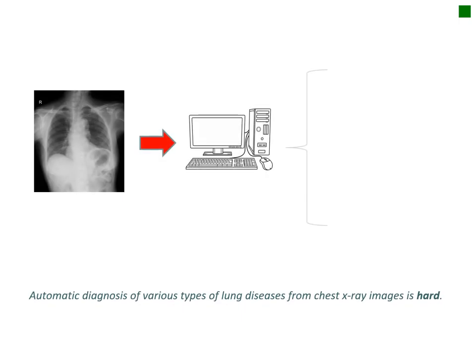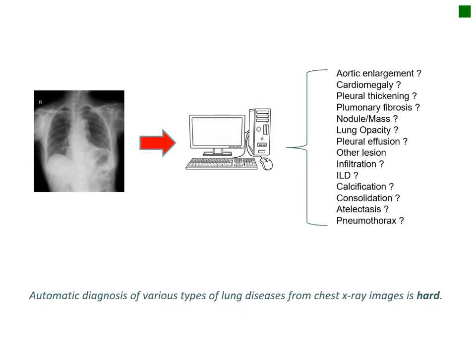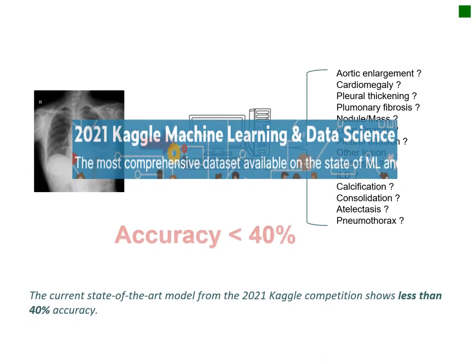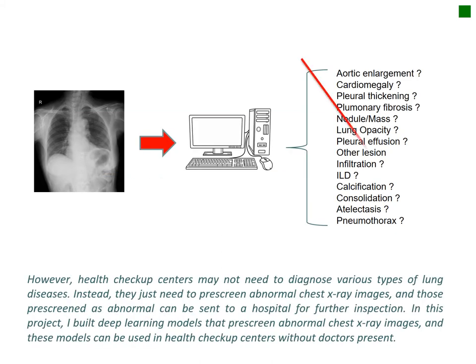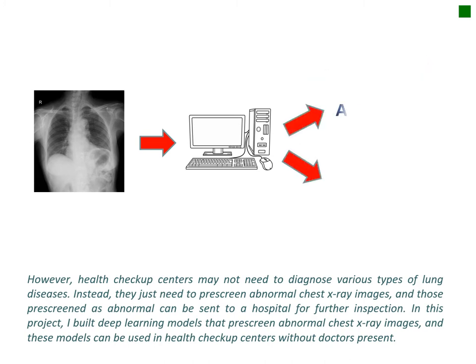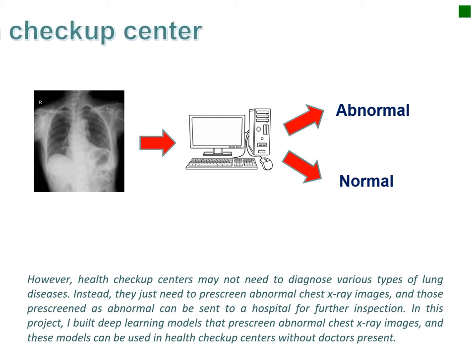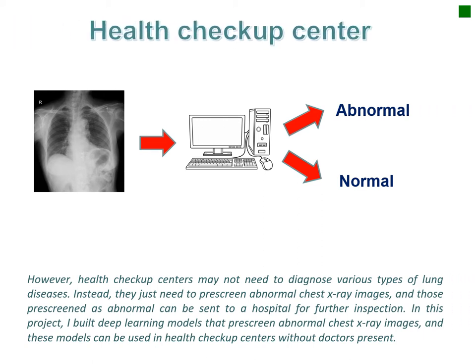Automated diagnosis of various types of lung diseases from chest x-ray images is hard. The current state-of-the-art model from the 2021 CAO competition shows less than 40% accuracy. However, health check-up centers may not need to diagnose various types of lung diseases. Instead, they just need to pre-screen abnormal chest x-ray images, and those pre-screened as abnormal can be sent to a hospital for further examination.